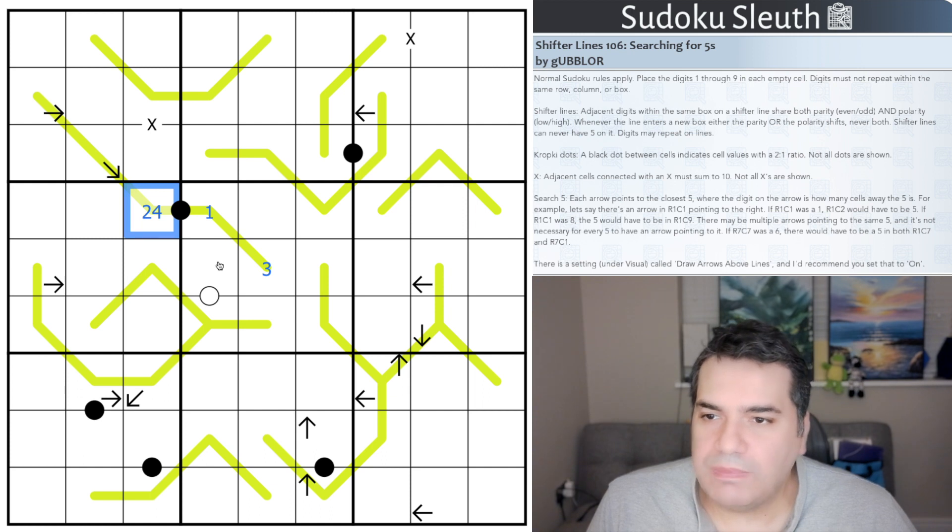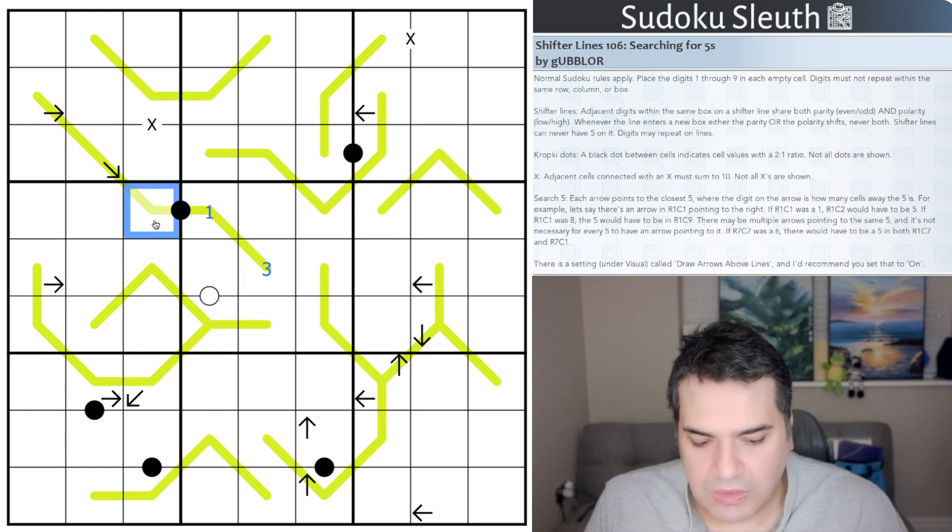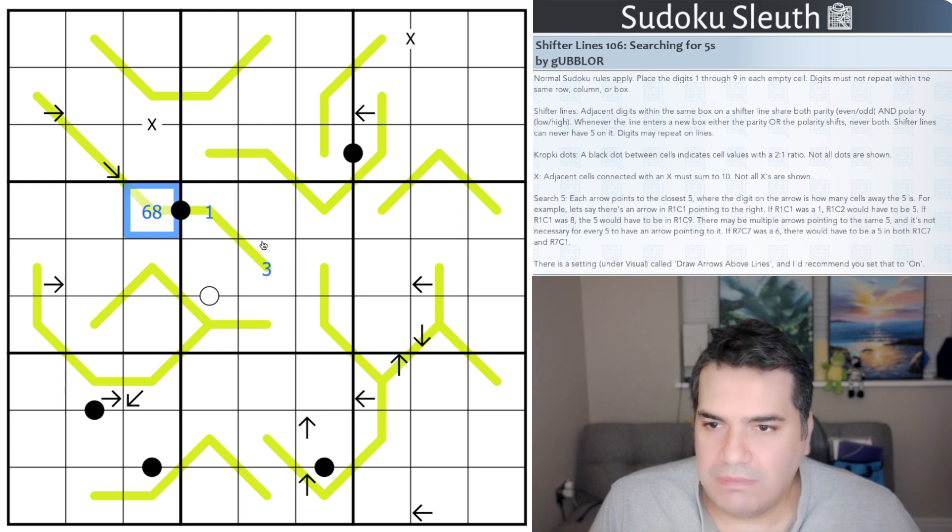So low even digits, which would be one of two or four. Another option would be that I change polarity, and I can go with high odd digits, seven or nine. What I cannot do is shift both and go six, eight. That breaks the shifter line rule set. The other thing that breaks the shifter line rule set is I place a five in here. That is absolutely not allowed on any of these lime green lines. So that's the shifter line.